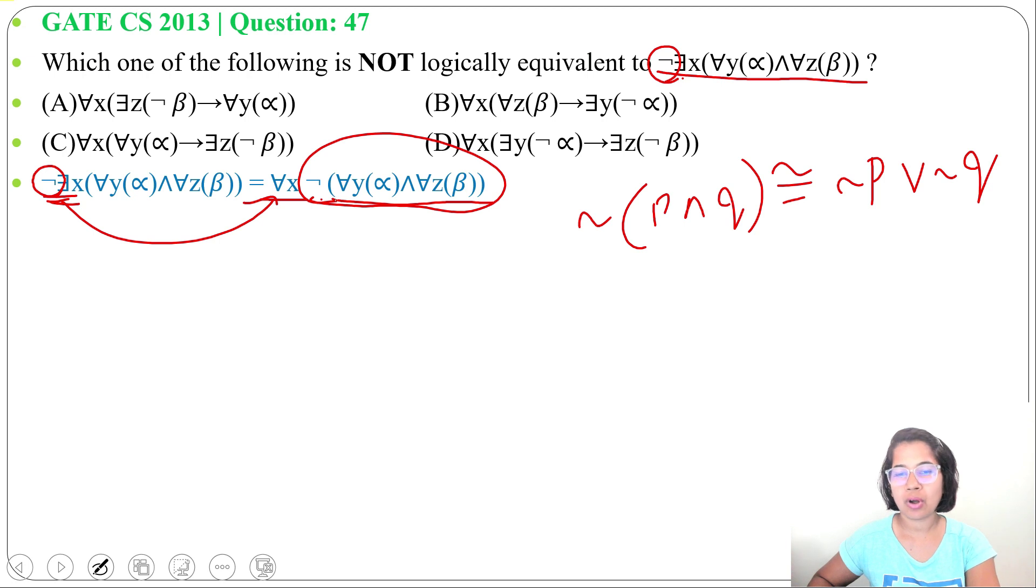So now after applying De Morgan's law here, we will get for all X, then negation of for all Y, alpha or negation of for all Z, beta. Previously it was and, now it is or.